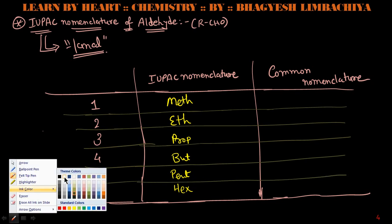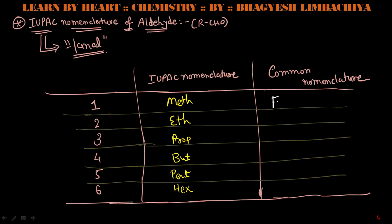For common nomenclature, the prefixes are: one carbon — form, two — acid (acet), three — propion, four — butyr, five — valor, six — capro.